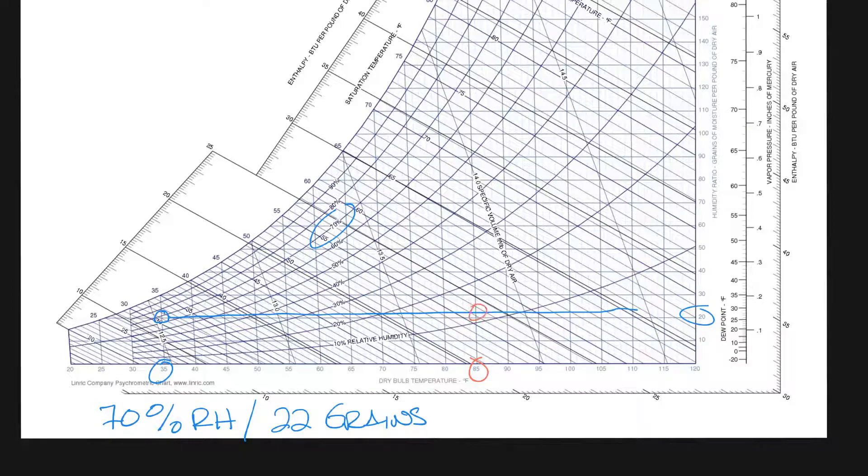Now let's do the same thing at 85 degrees. You can see at the same absolute humidity we're actually closer to 12 percent relative humidity.